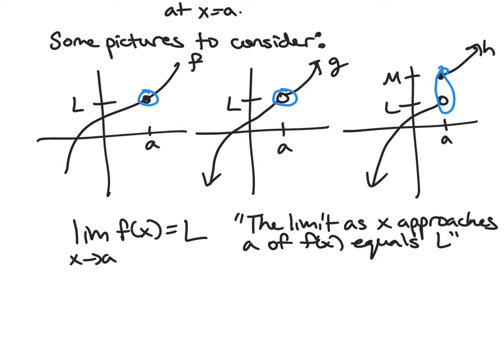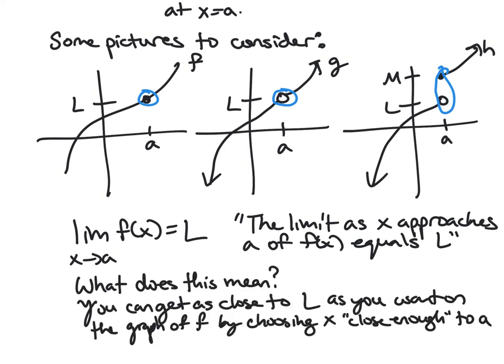Well this means that you can get as close to L as you want on your graph by getting close enough to a. So let's think of it here. If I just want to be within this little band of L, then all I have to do is say okay, well if I'm within this little strip around a I'm going to be as close to L as I want.